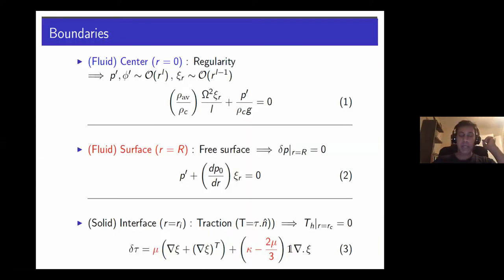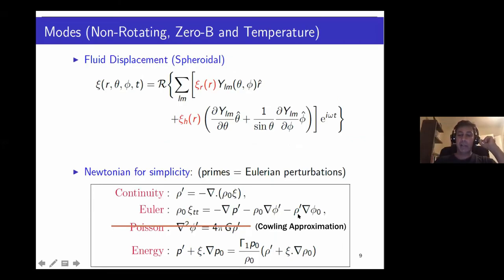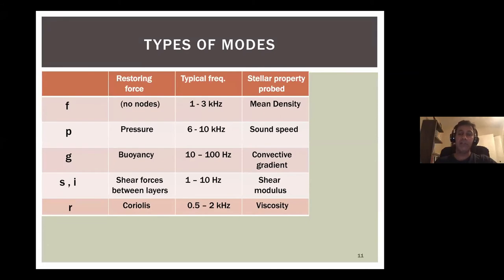In the Euler equation there are several terms — grad p′, grad φ₀ — representing different restoring forces. It's like Newton's law of motion for the fluid, and with rotation you also get a Coriolis force. These restoring forces all act together, but standard practice is to focus on a particular driving term. For g-mode oscillations one focuses on the buoyancy restoring force; for r-modes, on the Coriolis term. Based on this simplification one arrives at certain classifications of oscillation modes.